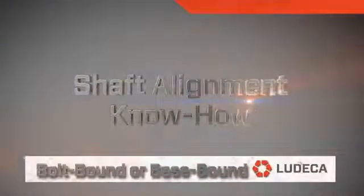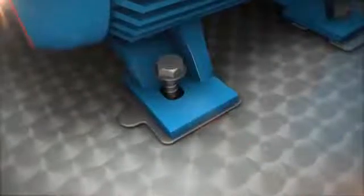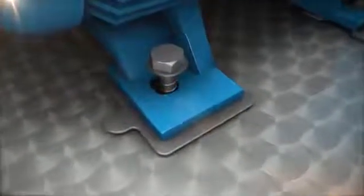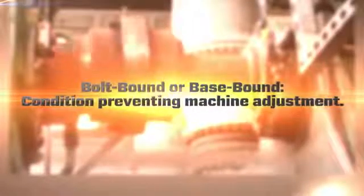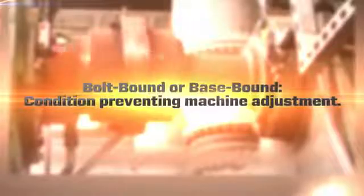Shaft alignment know-how. Bolt bound or base bound. A common problem we encounter when doing shaft alignment is to become bolt bound or base bound. This is defined as a condition that prevents a machine adjustment from being accomplished because of insufficient clearance.